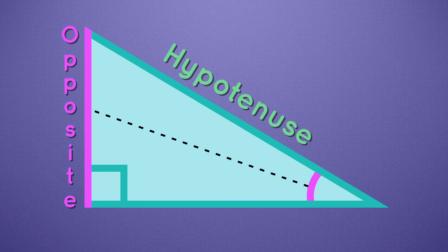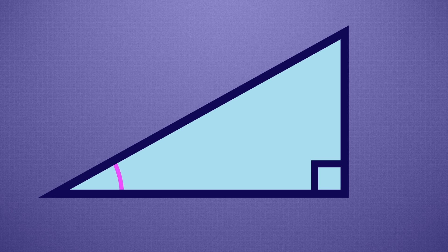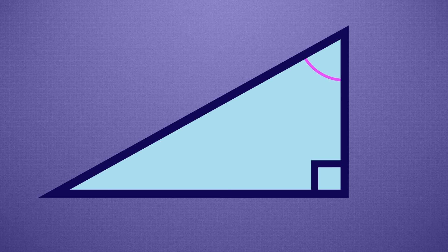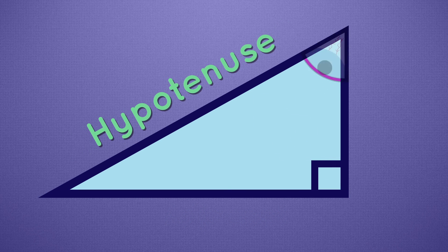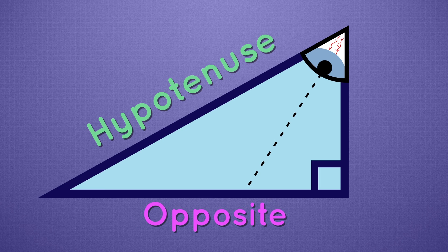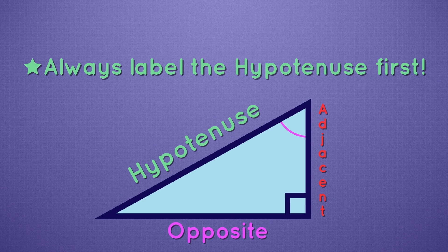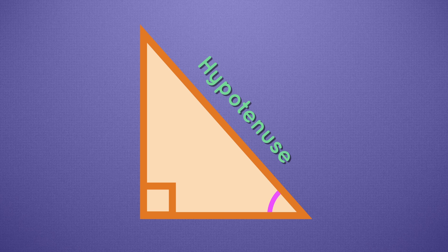The hypotenuse always stays the same, but the opposite side can change depending on where our angle is. The third side is called the adjacent side. Adjacent means next to, and the adjacent side is the one our angle is next to. So if this is our angle, we know that this side is the hypotenuse, that we're looking at this opposite side, and that this is the side next to our angle — that's the adjacent side. This is why it's important to label the hypotenuse first. Technically, it's also next to our angle, but since it already has a name, we don't consider it an adjacent side. From this angle, our adjacent side is here. And from this angle, our adjacent side is here.